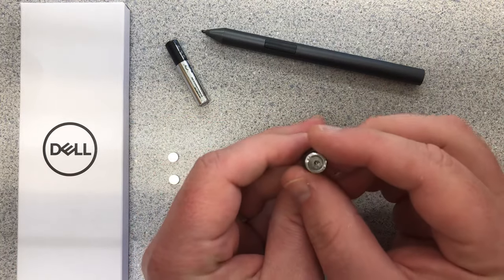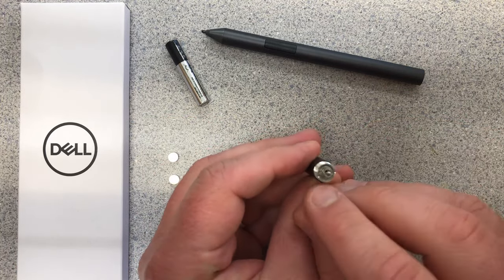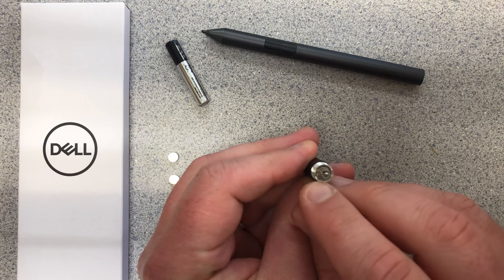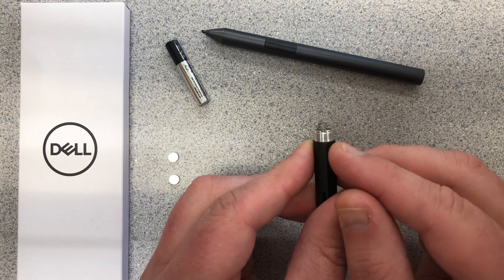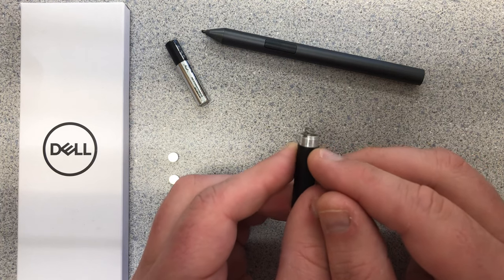So what we're going to do is right here we're going to look at the spring and you can notice on either side of the spring there is a tiny little notch. It's nearly impossible to see in this video but there it is.